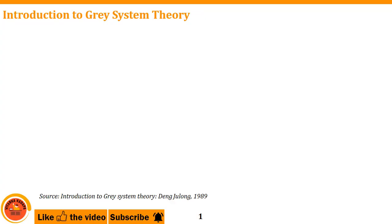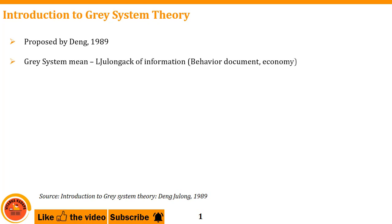In this video I will talk about introduction to gray system theory, which in almost all research is termed as gray relation analysis, shortly called GRA. What is this gray theory, who proposed it, what is the science behind it, and what are the mathematical formulations? This gray system theory was proposed by Professor J. Deng in the year 1989.